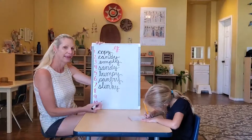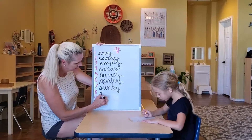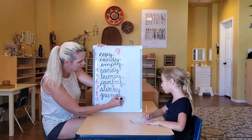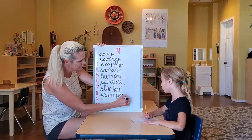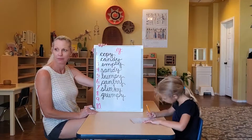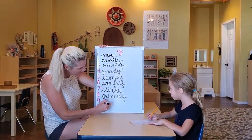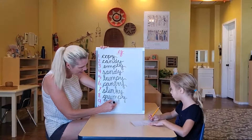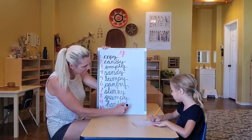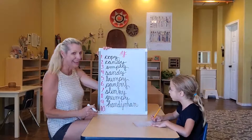Number 8: grumpy, G-R-U-M-P-Y, grumpy. Number 9: handyman, H-A-N-D-Y, M-A-N, handyman.